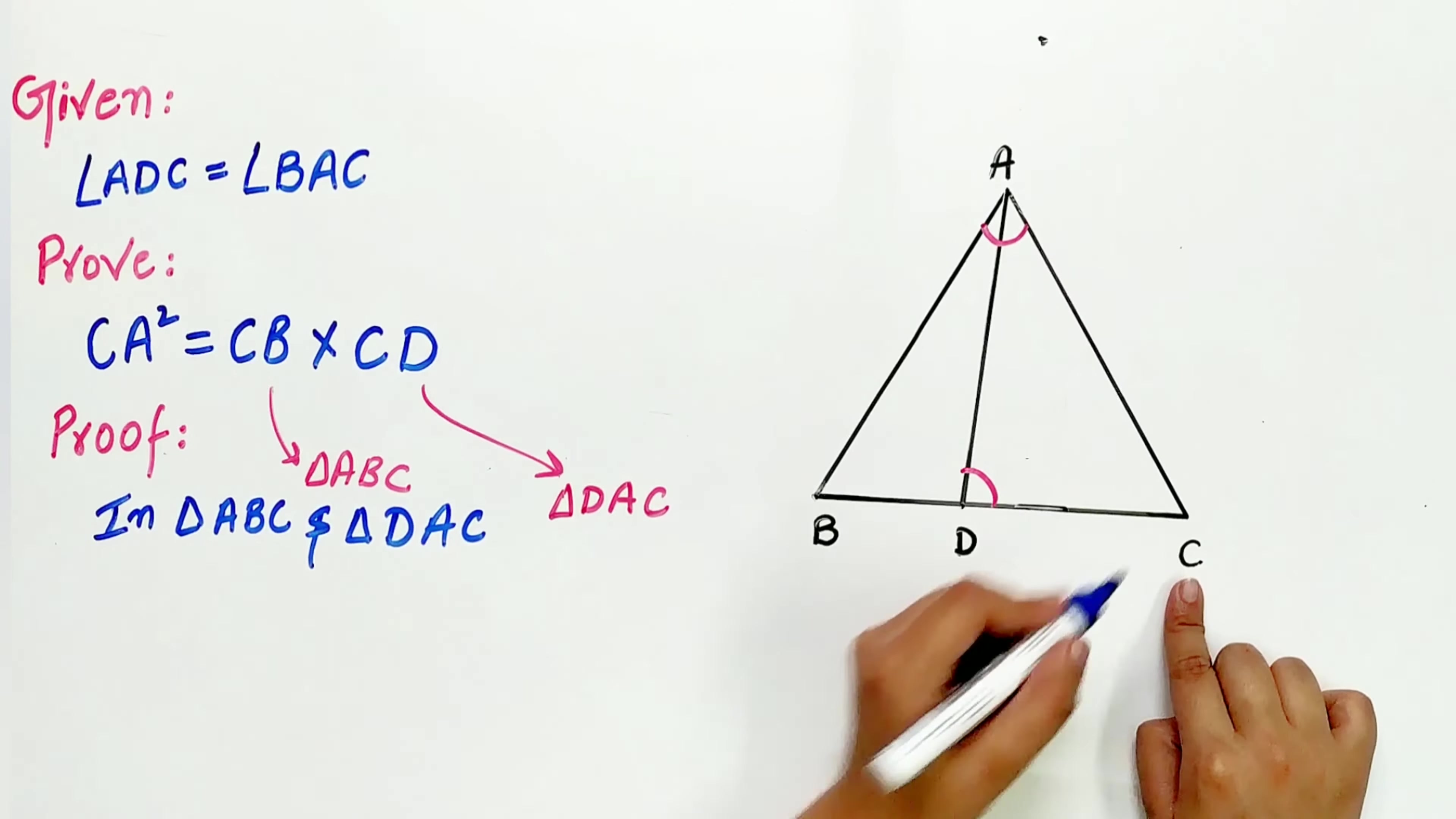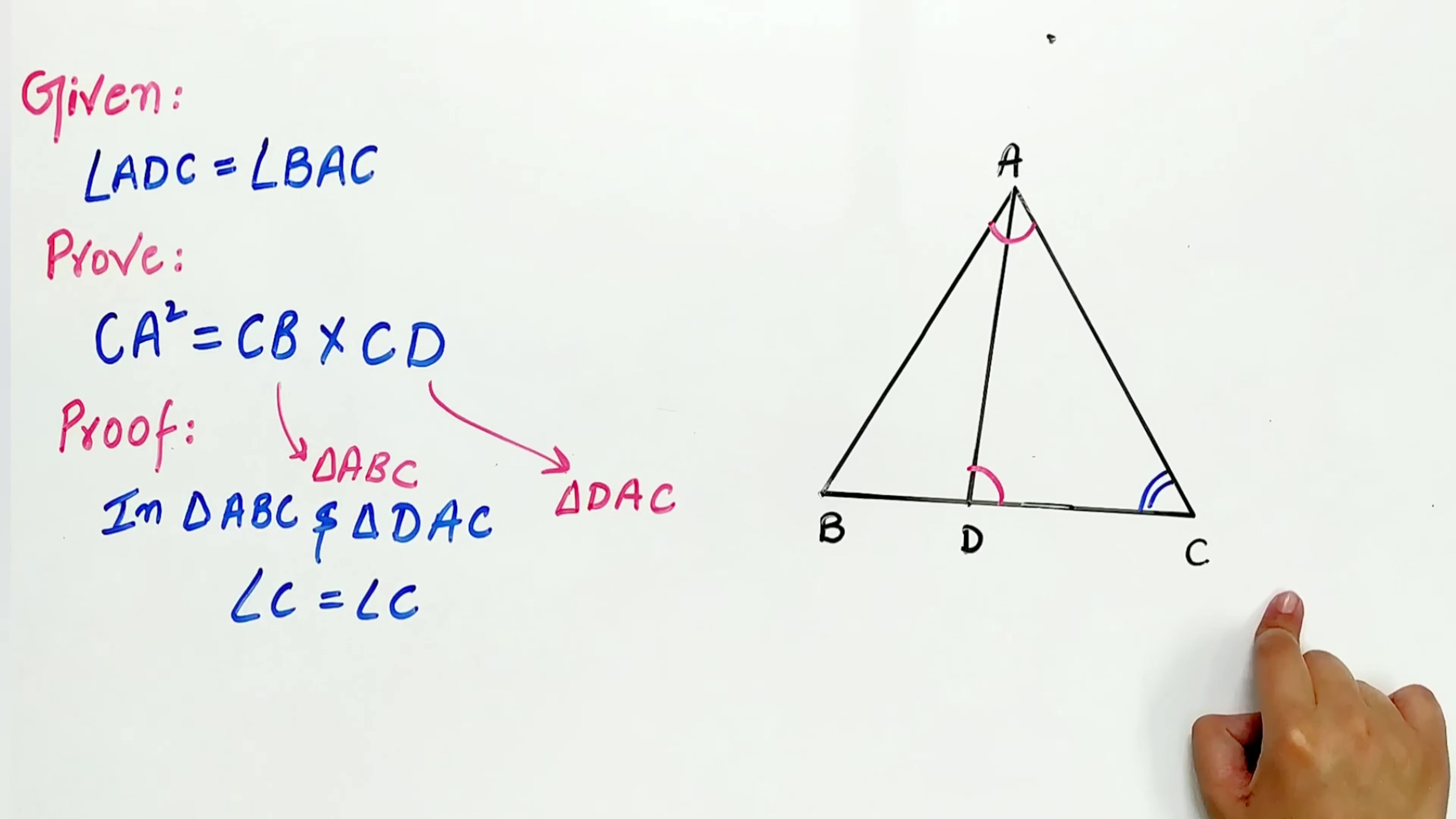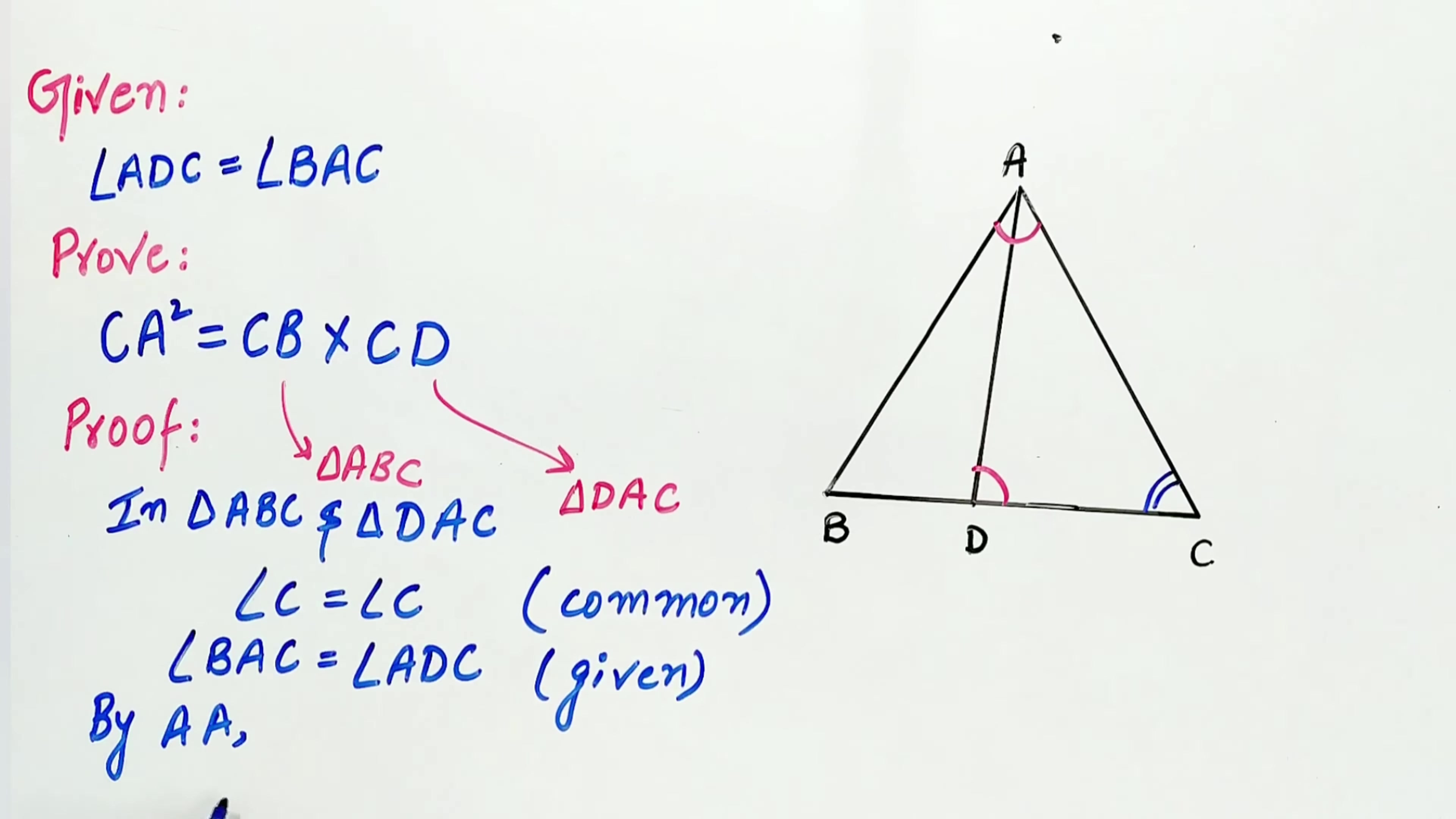Angle C is common in both the triangles and angle BAC is equal to angle ADC that's given to us. By AA, that is angle-angle, both these triangles are similar.